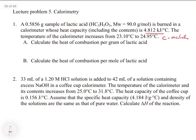The second example says: 33 mL of a 1.2 molar HCl solution is added to 42 mL of a solution containing excess NaOH in a coffee cup calorimeter. The temperature of the calorimeter and its contents increases from 25 to 31.8 degrees Celsius. The heat capacity of the coffee cup is 0.156 joules per degree Celsius, and we assume the specific heat capacity and density of the solutions are the same as pure water. Calculate delta H of the reaction.